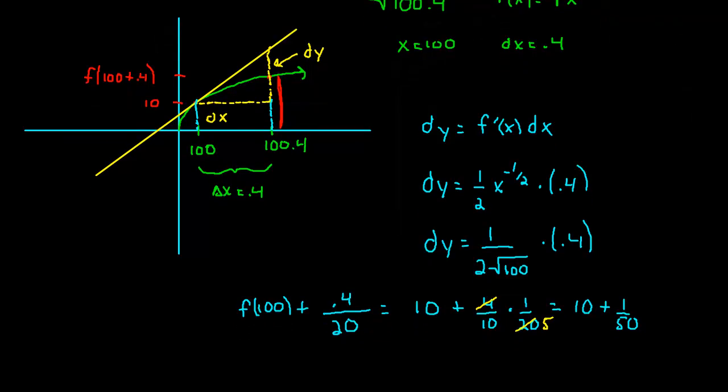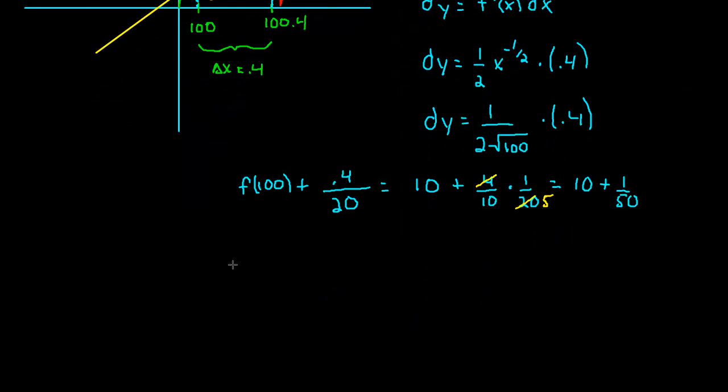So we have an approximation. We have an approximation for the square root of 100.4, and it is approximately 10 and 1 fiftieth. It's not an exact answer, but it is an approximation, and it turns out it's a pretty good approximation. You can check that out on your calculator to verify it. But that is one use for differentials. I hope that made sense. In the next video, we will look at another use of differentials, which is propagated error. See you there.